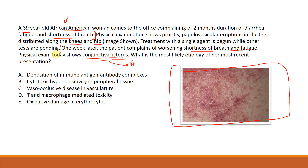There is likely something causing worsening anemia, and she's now jaundiced — scleral icterus — suggesting bilirubin release into the blood. The question asks for the most likely etiology of her most recent presentation. Loss of blood alone doesn't cause jaundice; rather, it's the lysis of blood cells that causes conjunctival icterus.